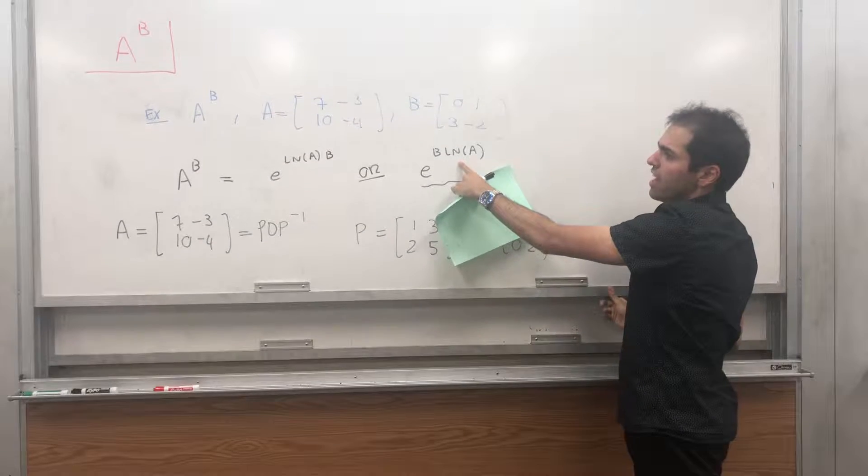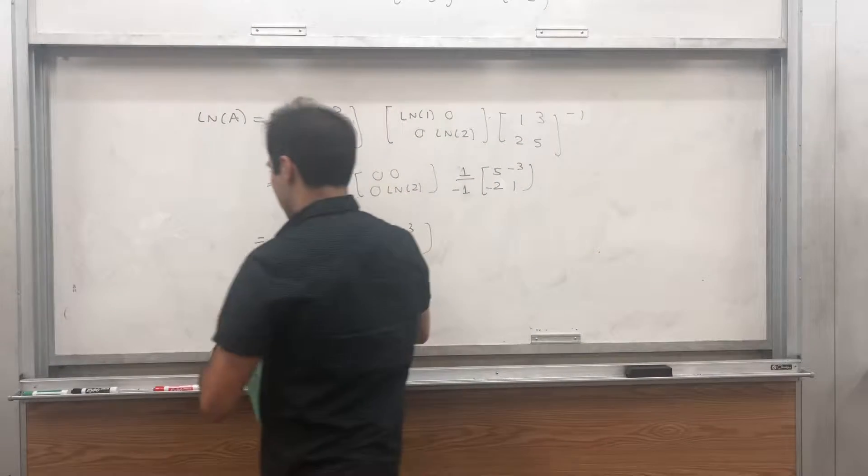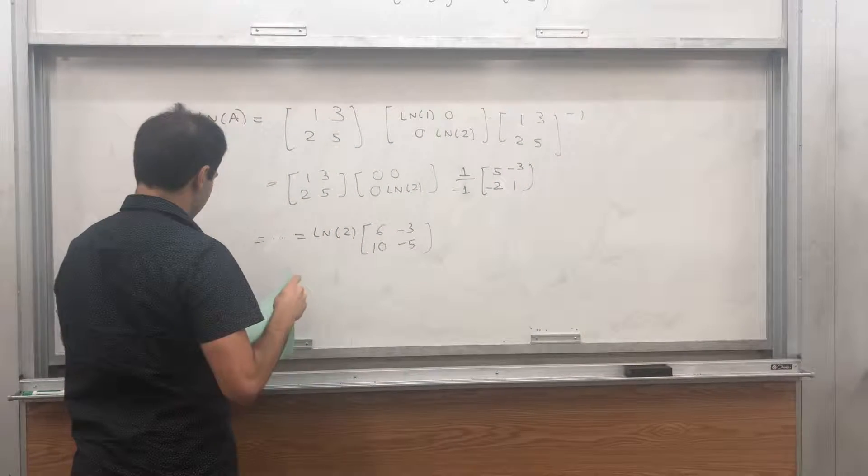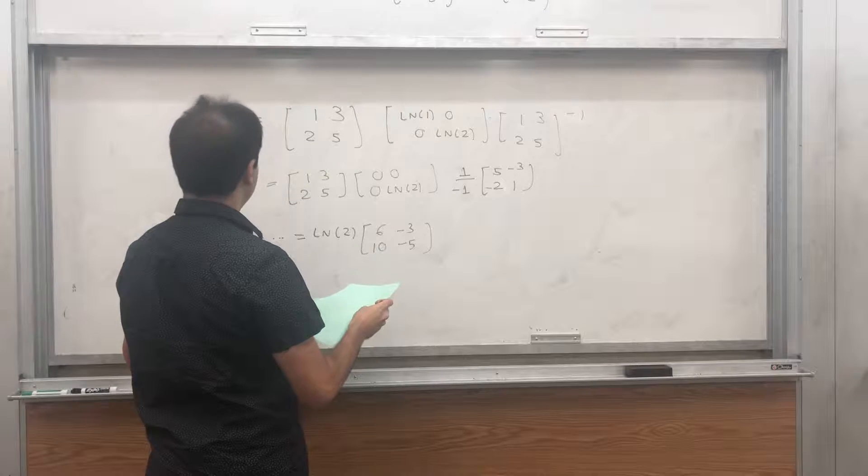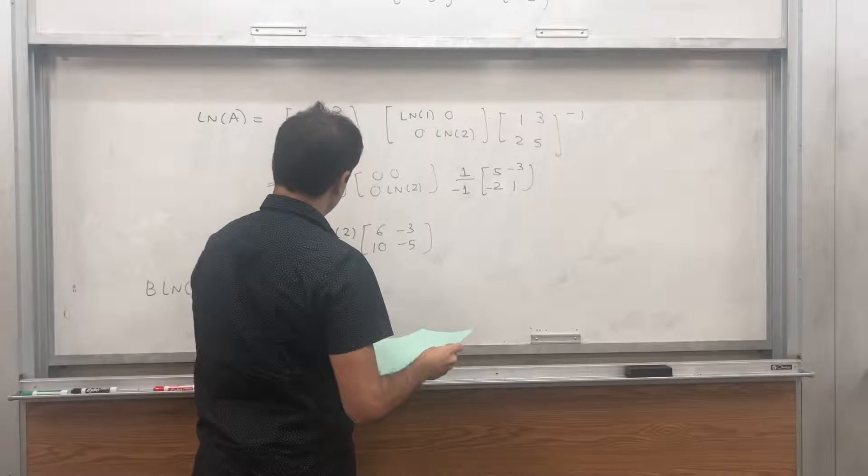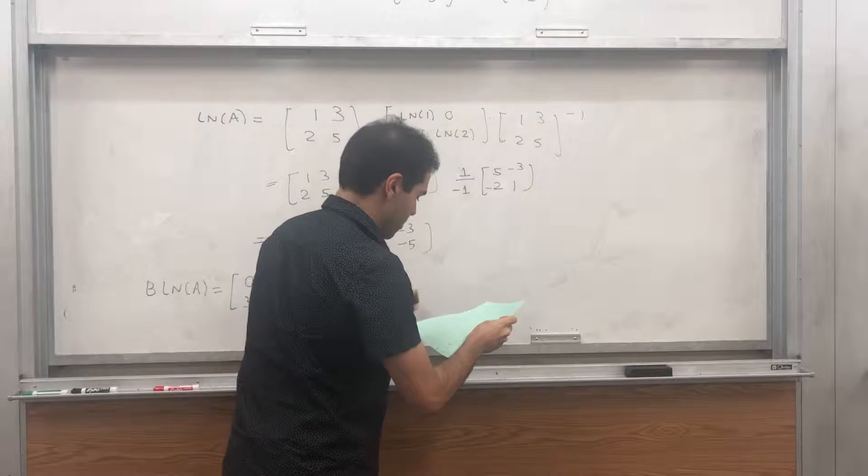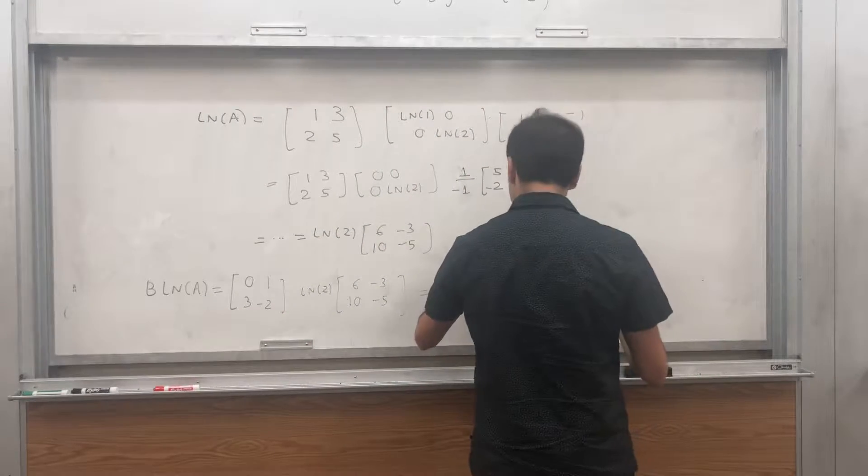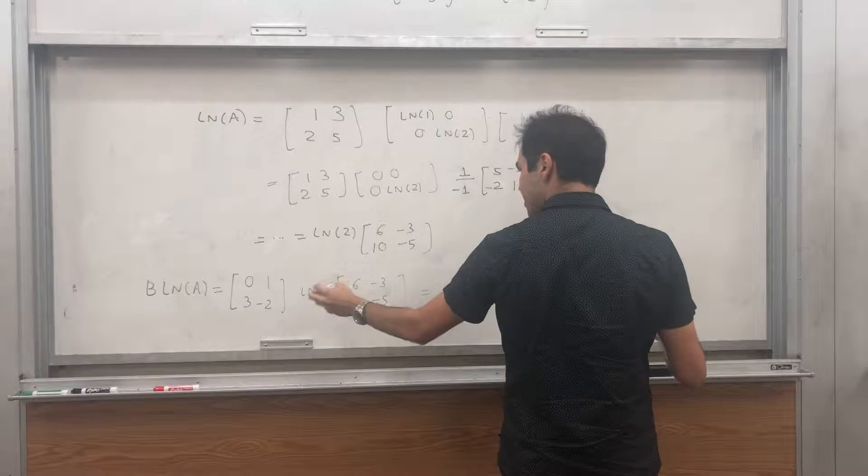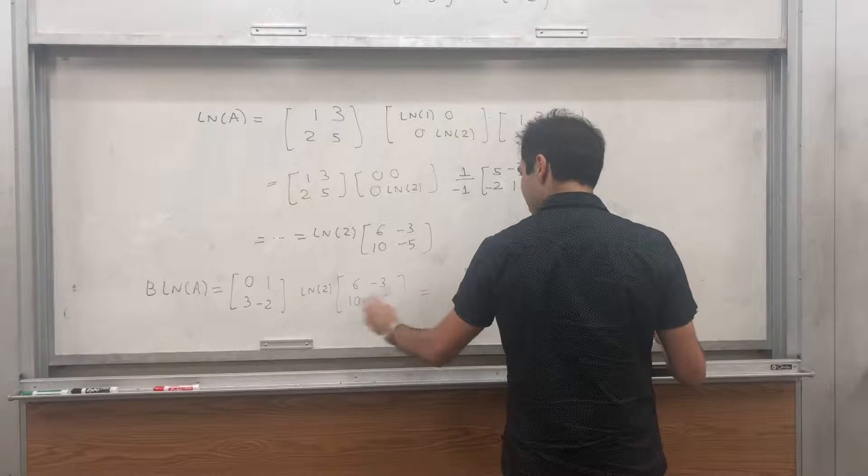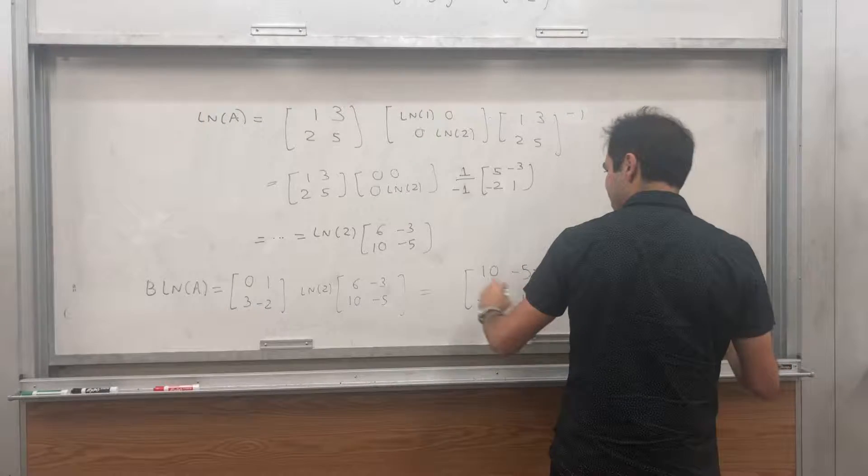And now the next thing is we want to multiply it by B to the left, so B ln of A. Okay, that is, you know, 0, 1, 3, minus 2, times this constant ln of 2, times 6, 10, minus 3, minus 5. And, I believe what you get is 10, minus 5. And, then, 18 minus 20, so minus 2. And, minus 9, plus 10, which is 1. All this times ln of 2.